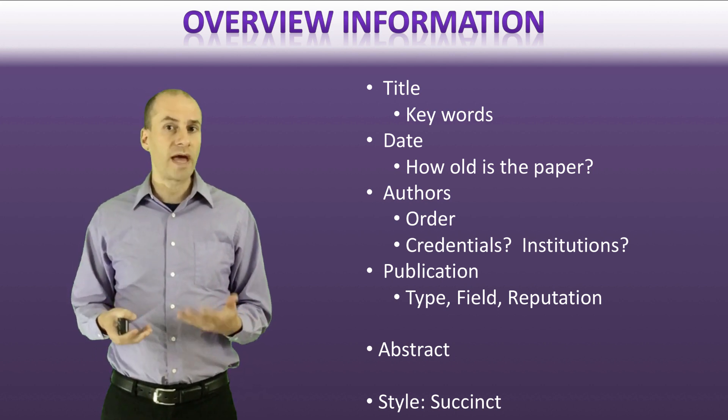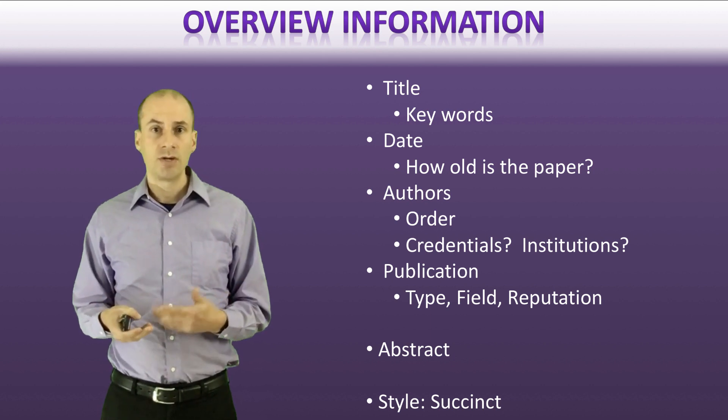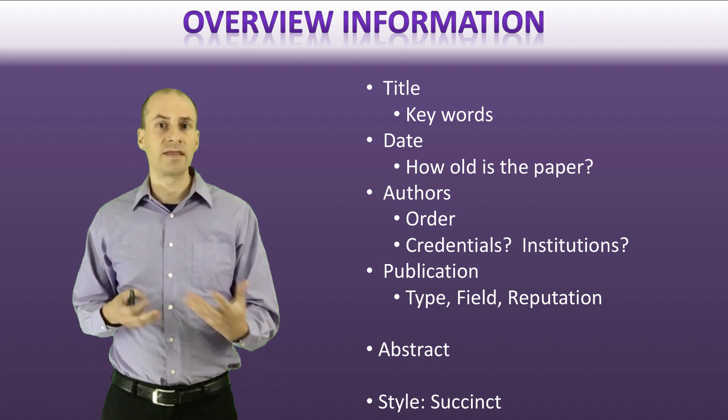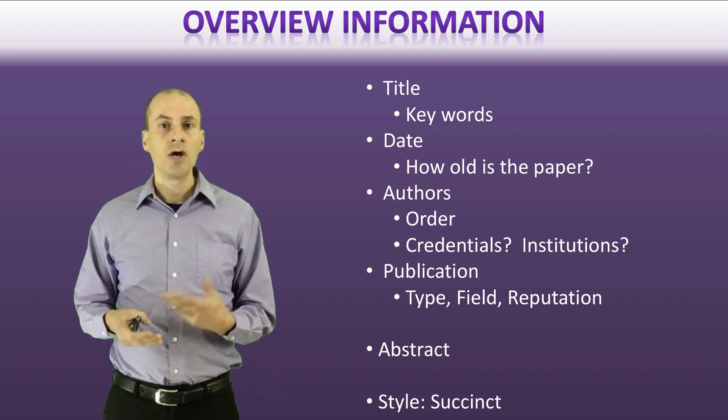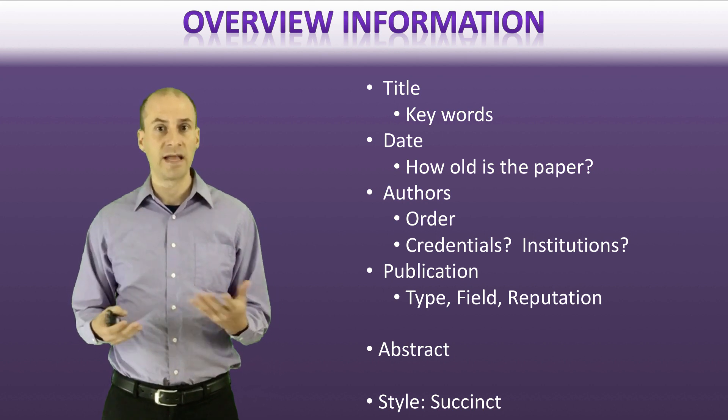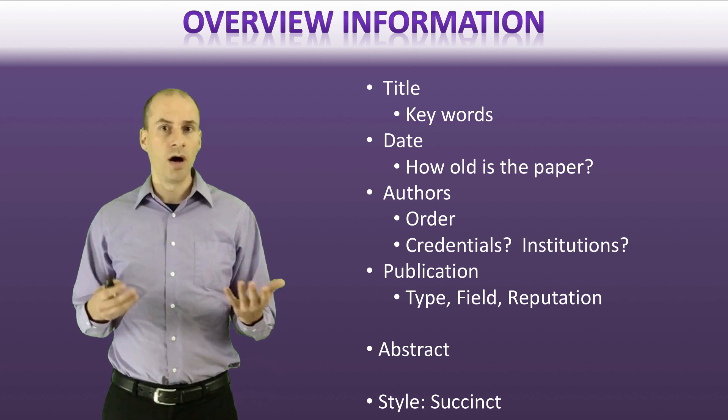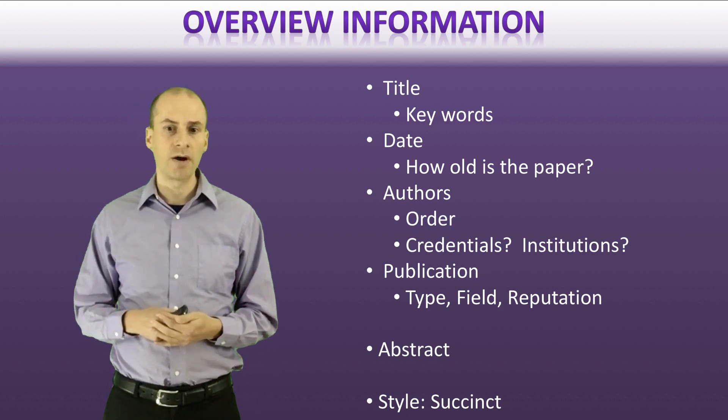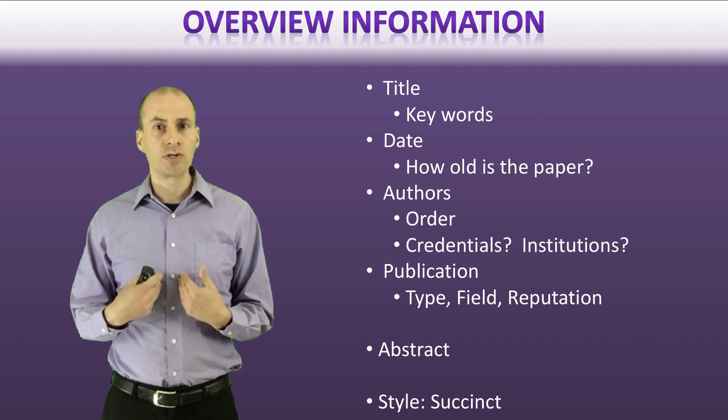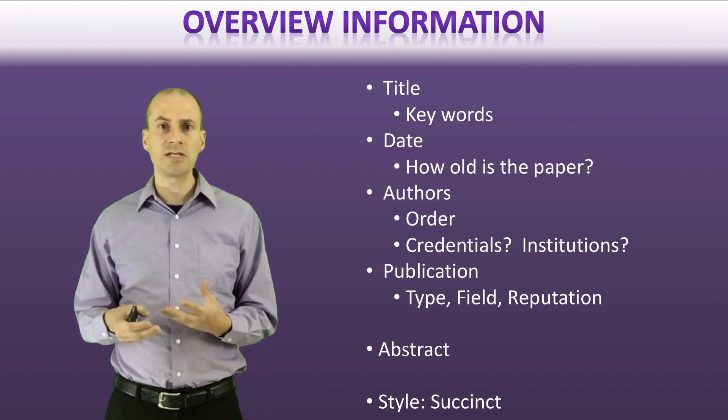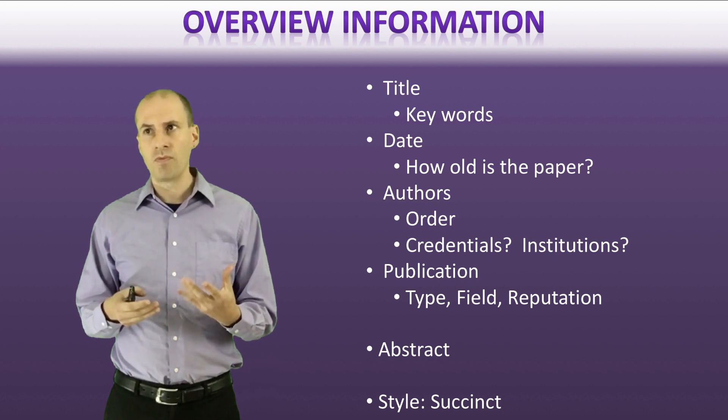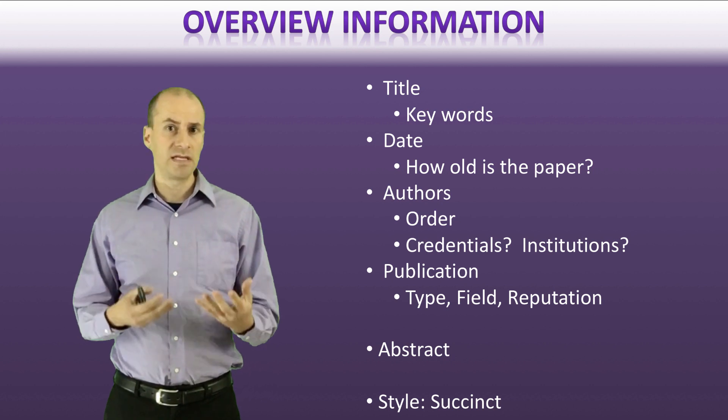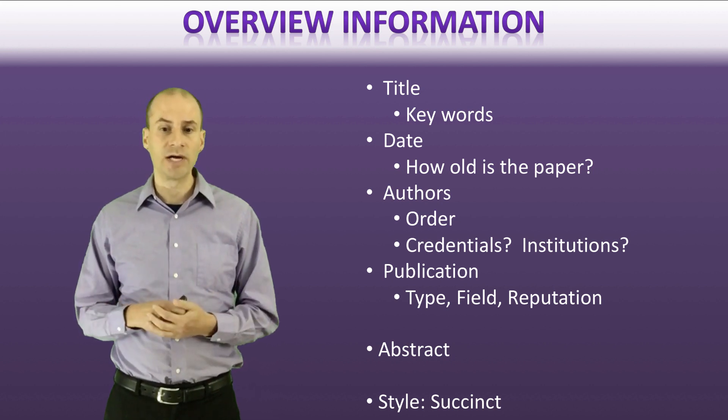Now there's other things that you can look at with respect to authors, for example their credentials - do they have a PhD, do they have other types of credentials that indicate that they would have expertise in this area. You could also look at the institutions, academic institutions that they're at or health care institutions that they're at and see how prestigious those institutions are. To be honest I rarely personally do this because it actually takes a fair bit of digging to go and see the background of an author, but if you're really committed to knowing the details of a paper you could potentially look into that question.